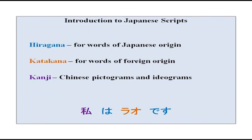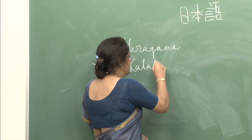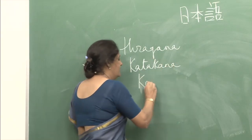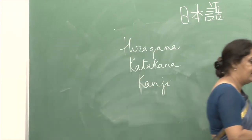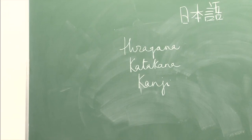There are three scripts in the Japanese language: hiragana, katakana, and kanji. The hiragana and katakana are called the kana scripts in Japanese, and kanji are the ideograms and pictograms. We will discuss kanji in detail later, but first we should talk about hiragana and katakana.